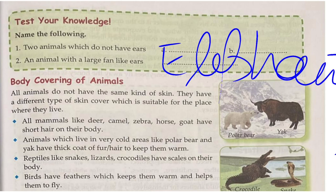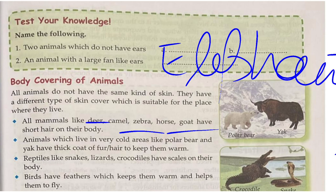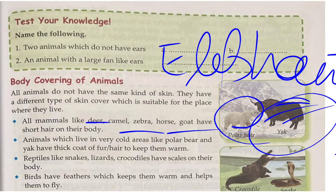Body covering of animals: all animals do not have the same kind of skin. They have different types of skin cover, which is suitable for the place where they live. All mammals like deer, camels, zebra, horse, and goat have short hair on their bodies. Animals which live in very cold areas, like polar bears and yak, have a thick coat of fur. Reptiles like snakes, lizards, and crocodiles have scales on their body.